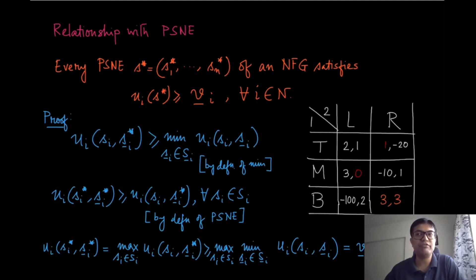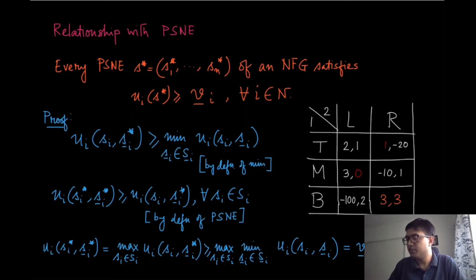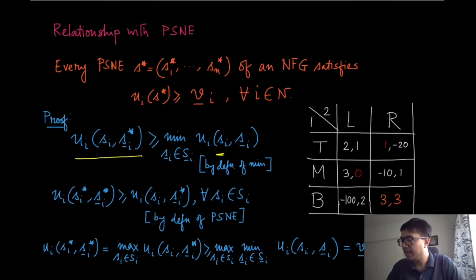This does not take away the risk factor: if all the other players are also rational, they will perhaps play a pure strategy Nash equilibrium, and in that Nash equilibrium the utility of all players is guaranteed to be at least their maximin value. We prove this in two steps. The first step is an observation: if you look at the utility of agent i when player i plays sᵢ and the other players are playing s_{-i}*, the pure strategy Nash equilibrium profile, then by the definition of minima this is at least as much as the minimum over all s_{-i} while player i sticks to sᵢ, and this must hold for all sᵢ.